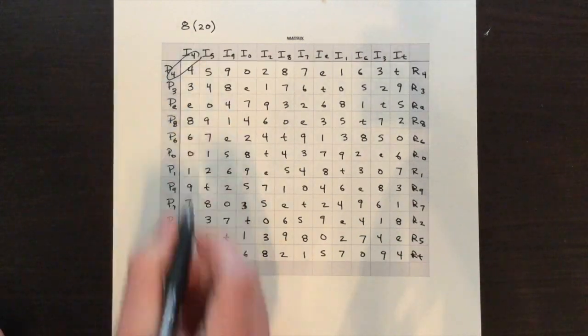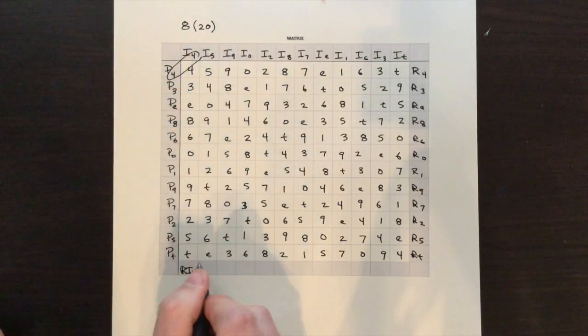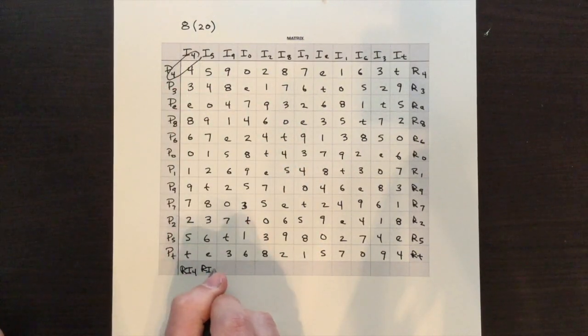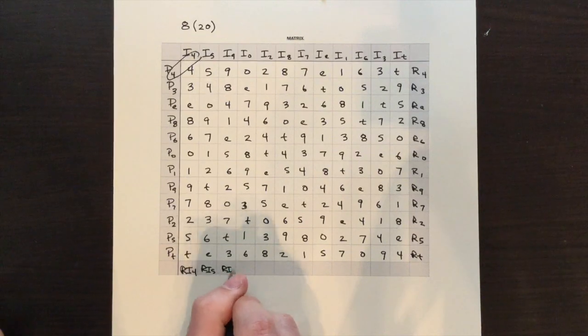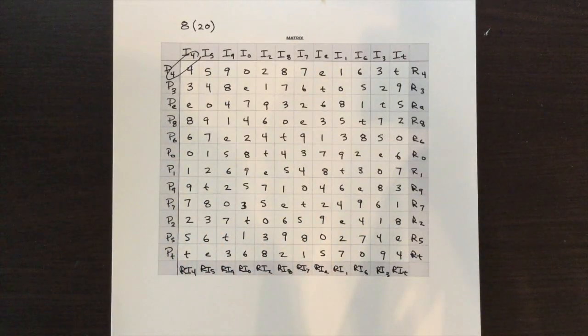And then our RI rows or RI columns will correspond to our I columns. So RI4, RI5 and so on. And there you have a completed matrix.